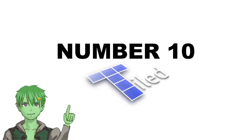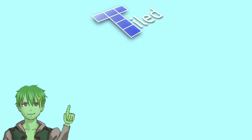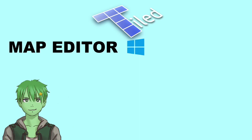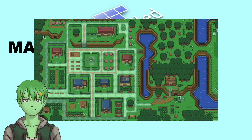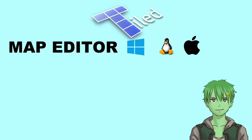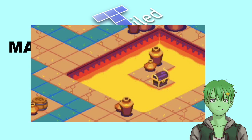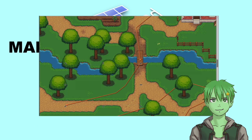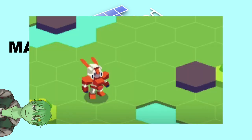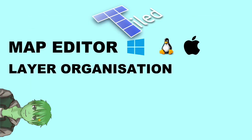Number 10: Tiled. Tiled is a free map editor for Windows, Linux and Mac OS, which you can use to create tilemaps for your games. You can make tilemaps in the isometric, orthogonal and hexagonal perspective. Tiled also allows you to organize your objects in different layers.